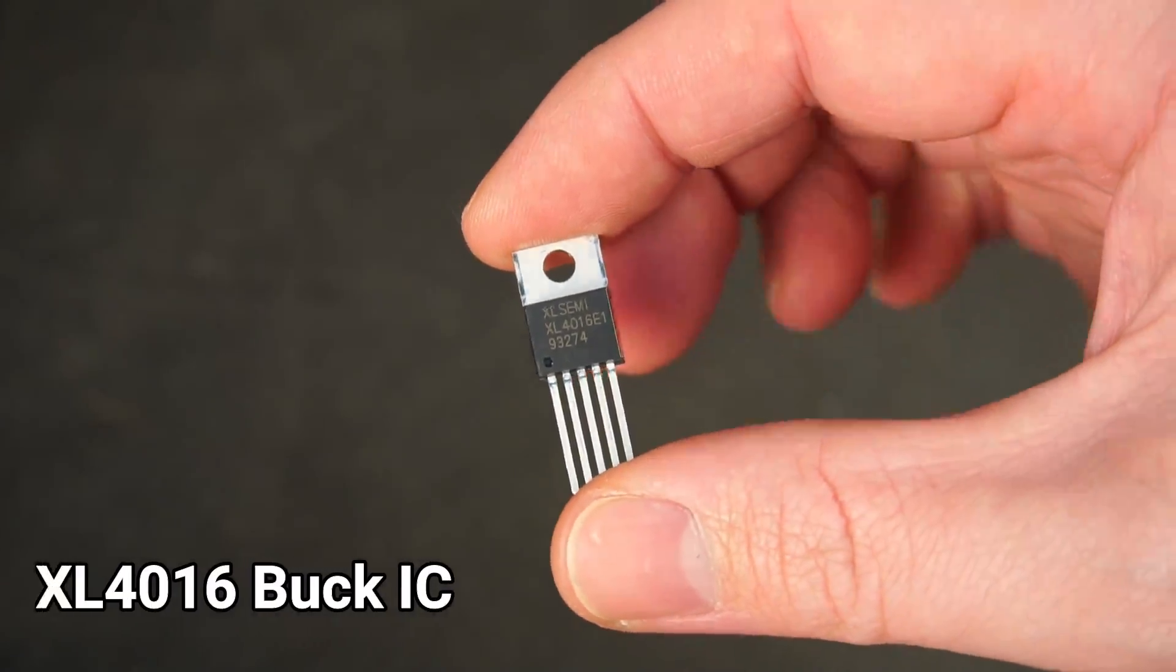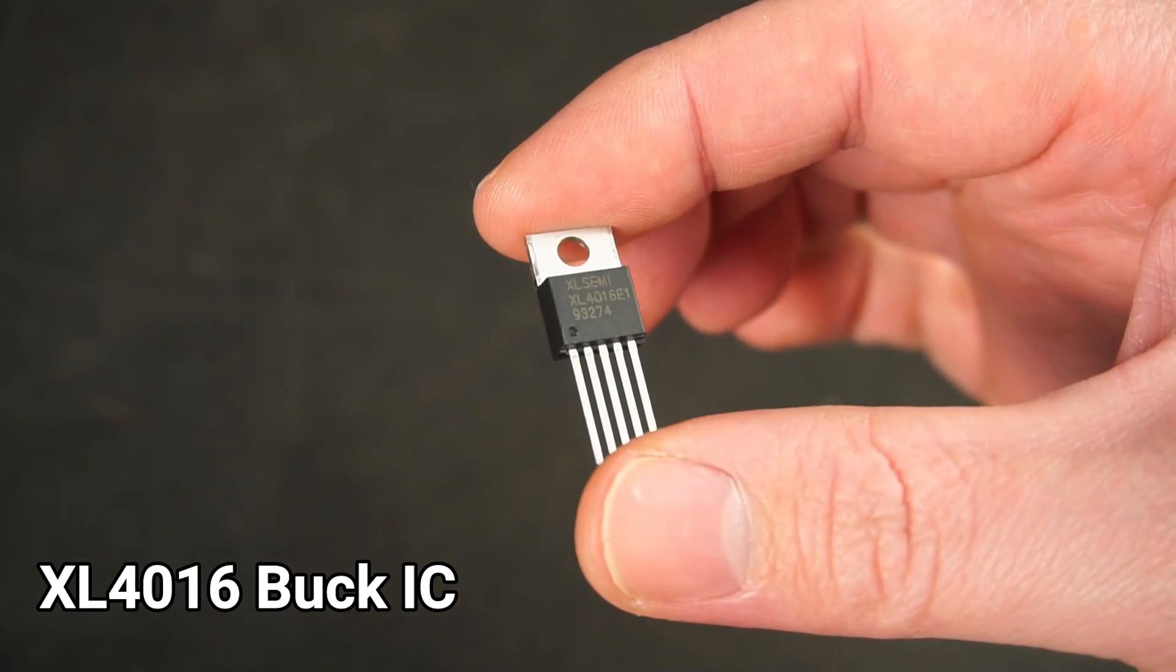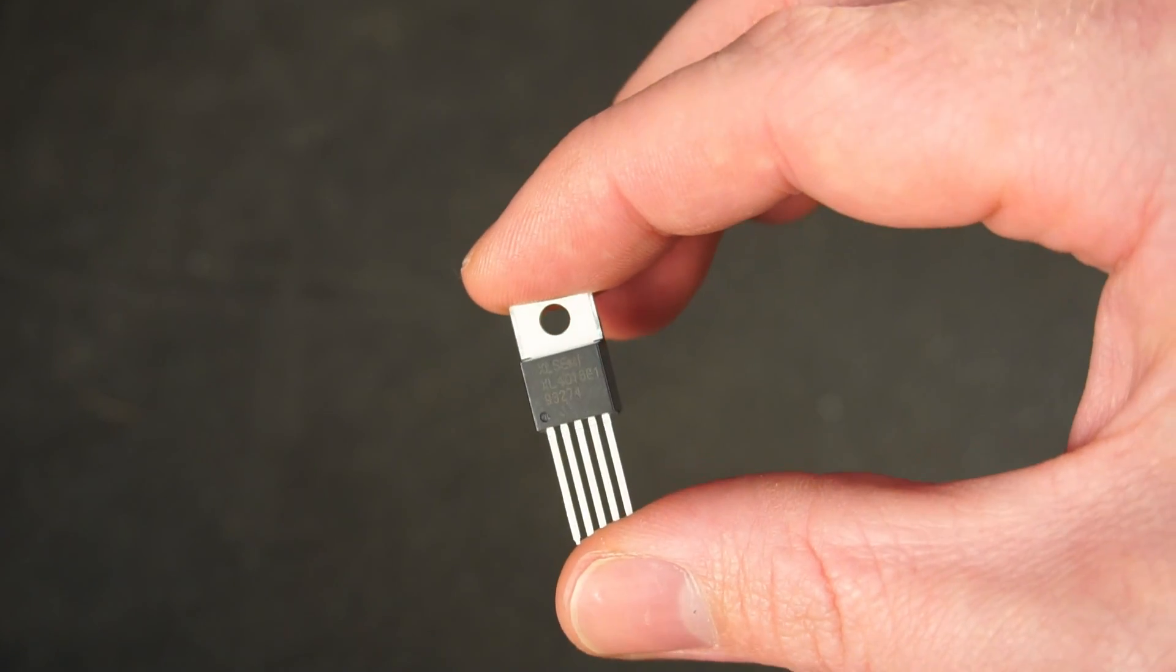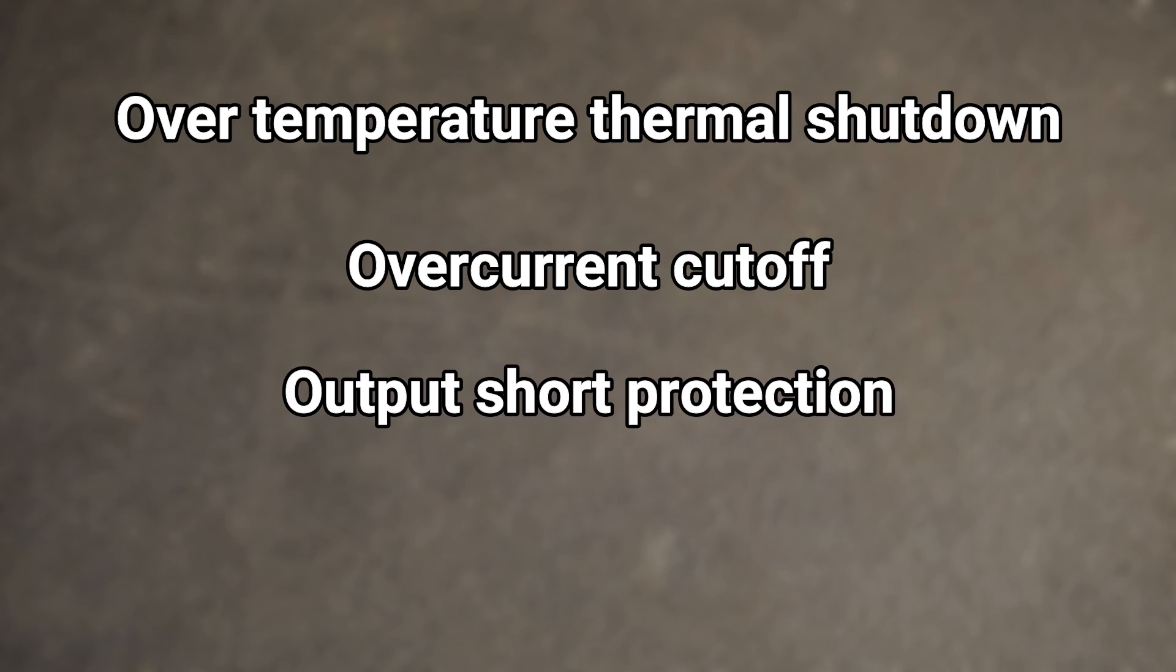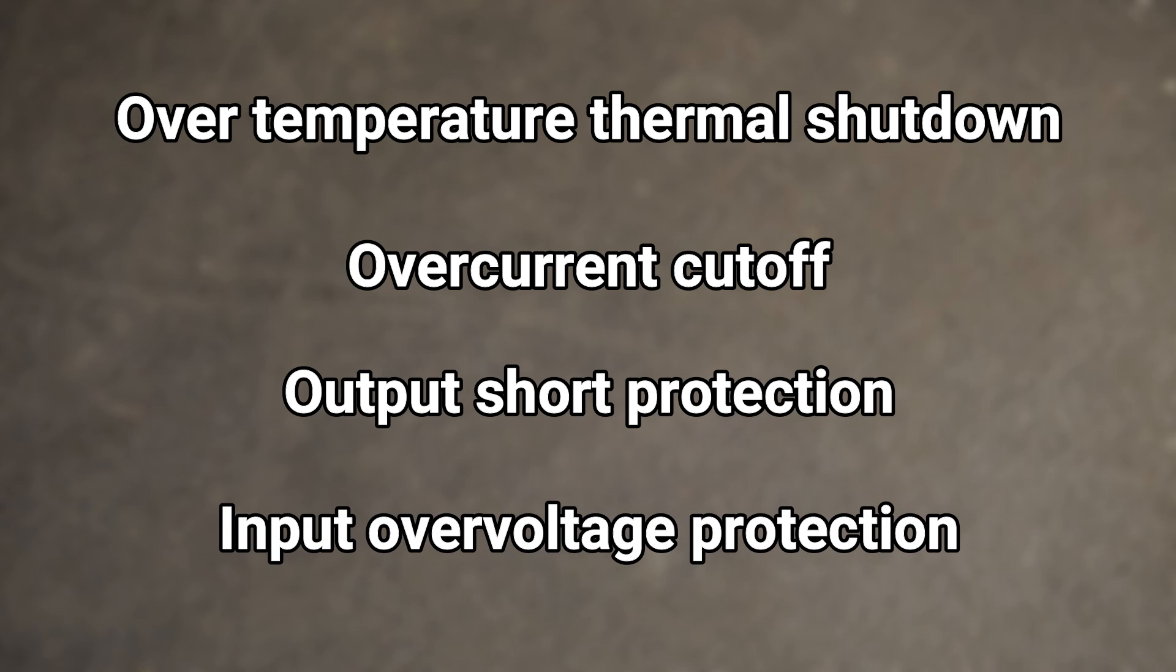At the heart of the buck converter is the XL4016 Buck IC which has a decent set of safety features including over temperature thermal shutdown, over current cutoff, output short protection and input over voltage protection.